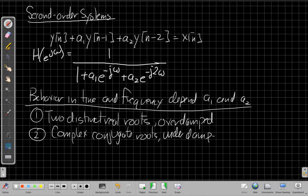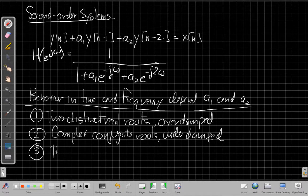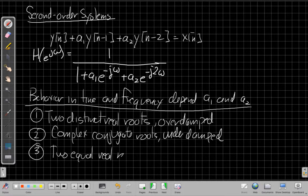There's another name for this, just so you know, in your signals vocabulary. And the third, fairly rare case, is I get two equal real roots. So I can write the denominator as the square of a first-order system.